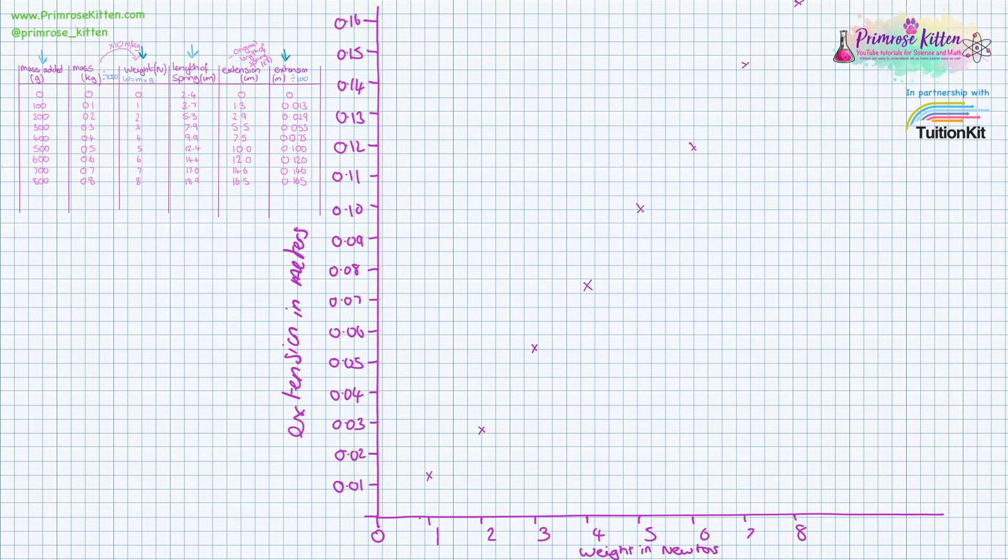That is a pretty nice looking graph. So we're just going to draw our line of best fit through there. And this one has to go through zero, because at zero newtons, you had zero extension.